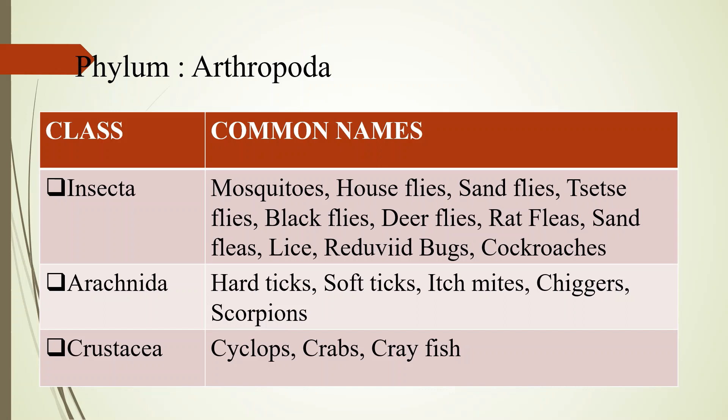Insecta is the largest class under phylum Arthropoda, which includes mosquitoes, house flies, sand flies, tsetse flies, black flies, deer flies, rat fleas, sand fleas, lice, reduviid bugs, and cockroaches. Flies and fleas are under the class Insecta, as are mosquitoes.